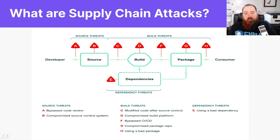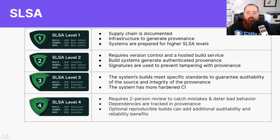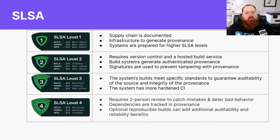Now, how do we stop these attacks from happening? There's a new security framework available called SLSA — Supply Chain Levels for Software Artifacts. It's a security framework, a checklist of sorts for standards and controls to prevent tampering. It helps improve integrity and secure packages and infrastructure in your projects. It has varying levels for increasing security controls, starting at Level 1 to Level 4.